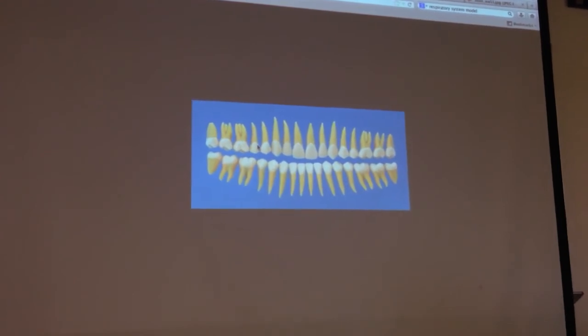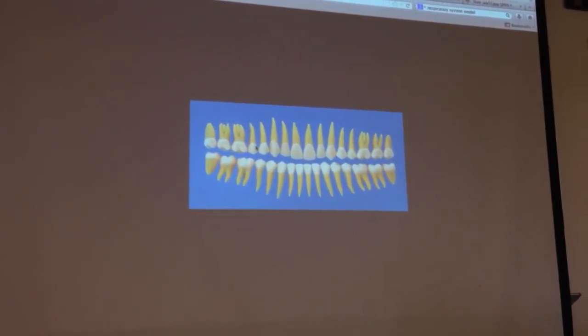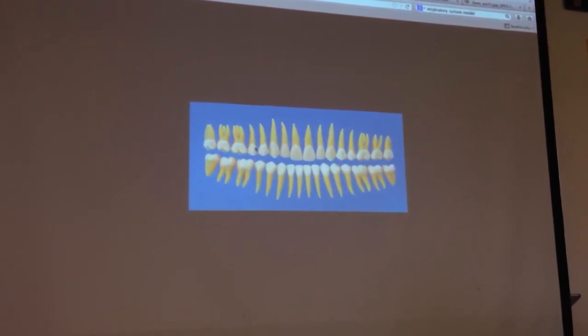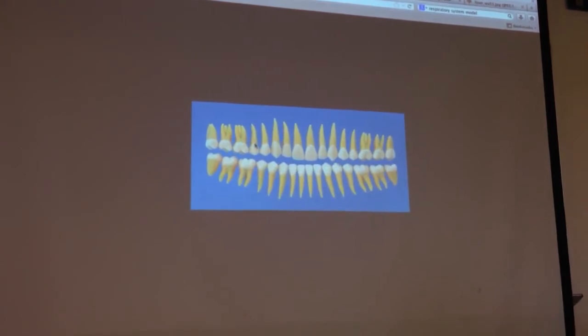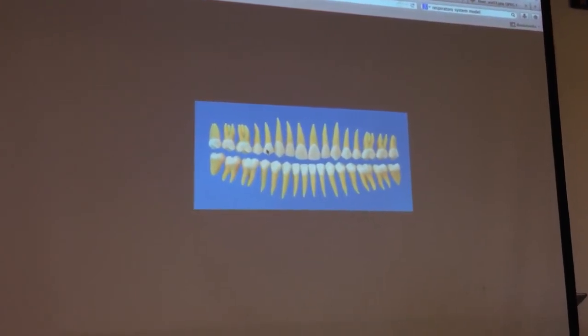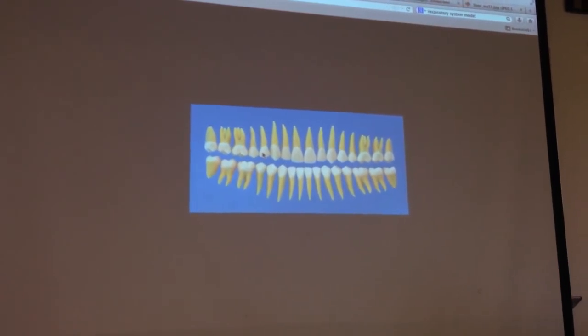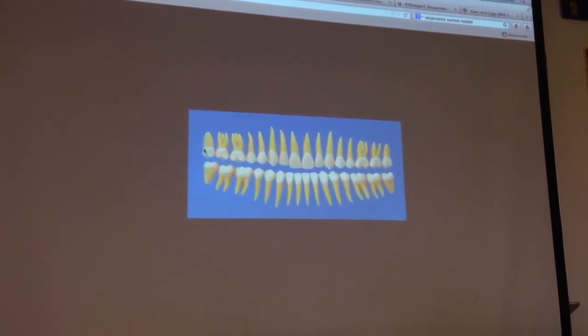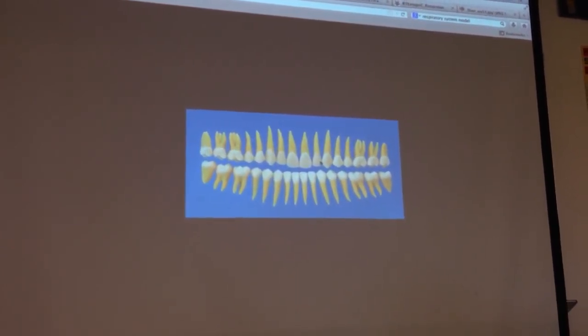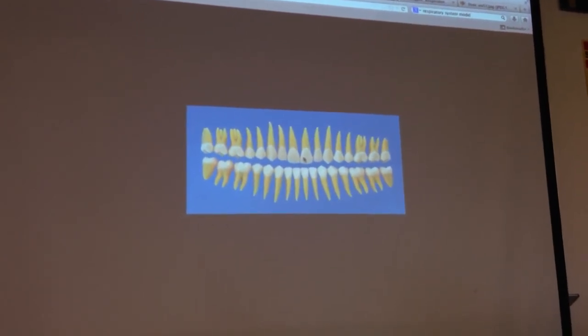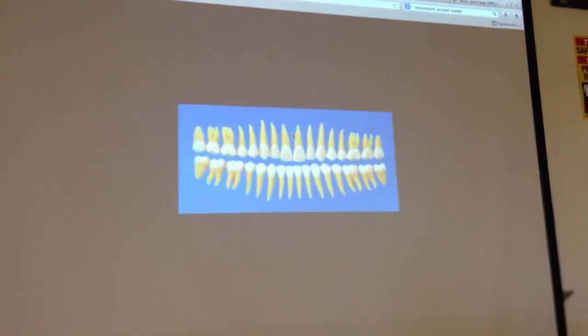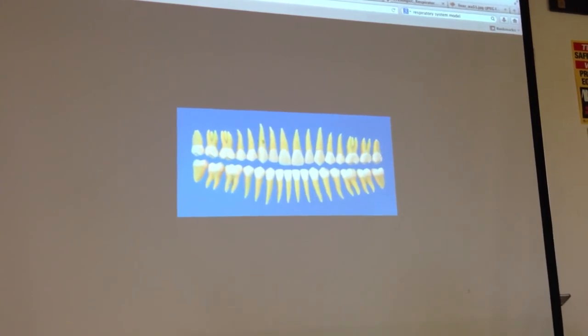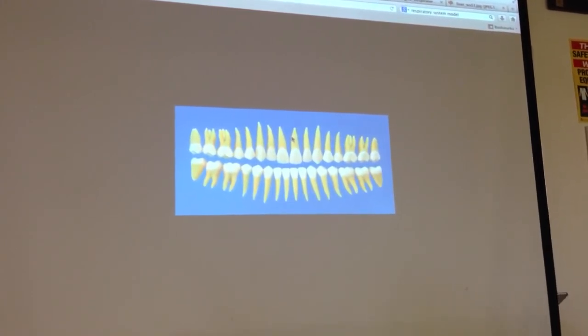For the last three, enamel dentin pulp cavity, those are technically layers. So I'll be asking you to identify the layers for those ones. As far as the structures go, you have the crown and the root. The dividing line between what's a crown and what's a root is essentially what's showing and what's below the gum line. So our tooth models that you'll see are just like this. The part that's above the root is shown in white. The part that's below the root is shown in a yellow color. So the crowns will be white, the roots will be yellow, and it's above and below the gum surface.